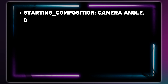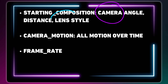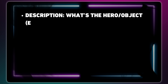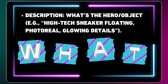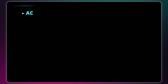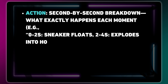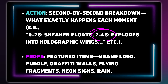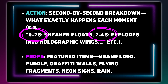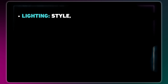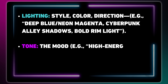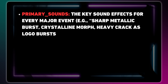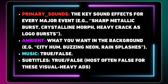First, I set the camera — where it is, the lens, if it's moving or not. Second is the subject, what we're focusing on. Then comes the real magic: the action, where I jot down what happens step by step, almost like a little timeline. I add in mood stuff — lighting, color, what the vibe should be. And finally, even the sound, what you'd hear, or music. That's it.